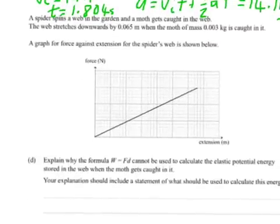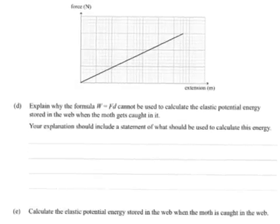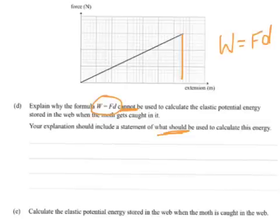Now we've got a spider spinning a web in the garden and a moth gets caught in the web. The web stretches downward by 0.065 metres when the moth of mass 0.003 kilograms is caught. This coordinate graph of the force against extension is shown below. Part d: explain why the formula work equals force times distance cannot be used to calculate the elastic potential energy stored when the moth gets caught in it. The explanation should include a statement of what should be used to calculate this energy. Well, the energy stored, work is force times distance, remember. So the energy done by the stretchy spring or elastic, whatever you call it, in this case stored elastic potential energy, is going to be the area under the graph.